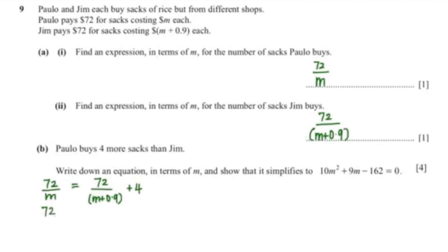I'm going to make the denominator on the right hand side the same. So that would be 72 plus with 4 multiplied with M plus 0.9 over M plus 0.9. And then I'm going to cross multiply to get rid of the fraction.